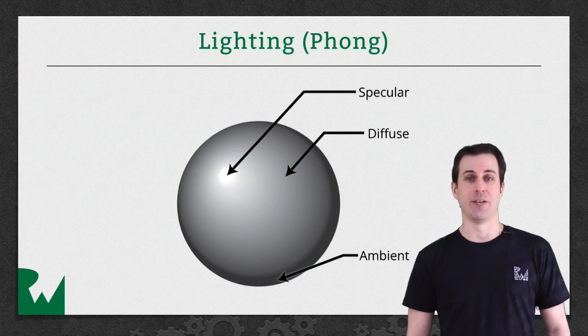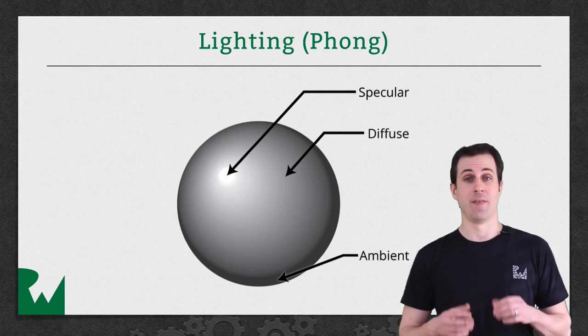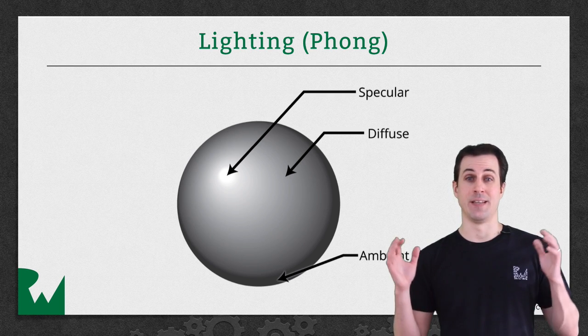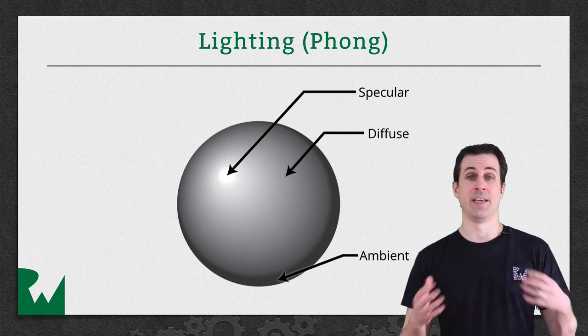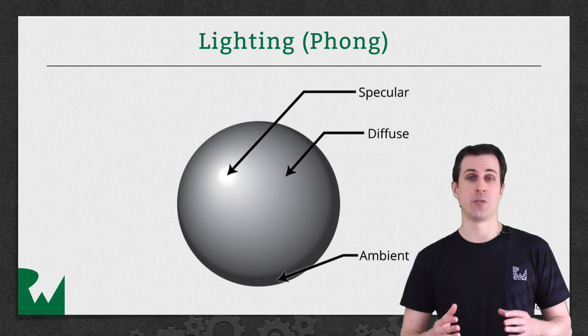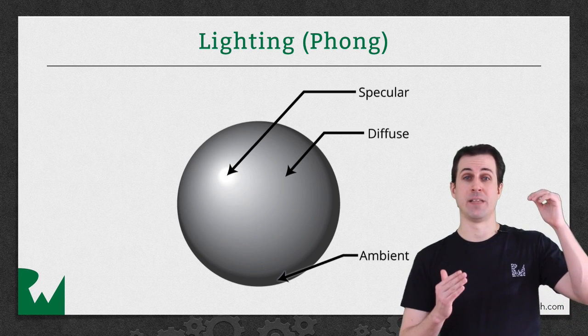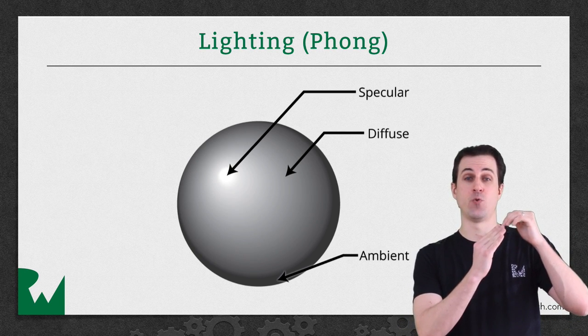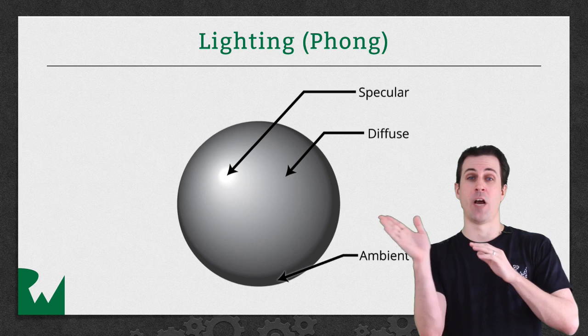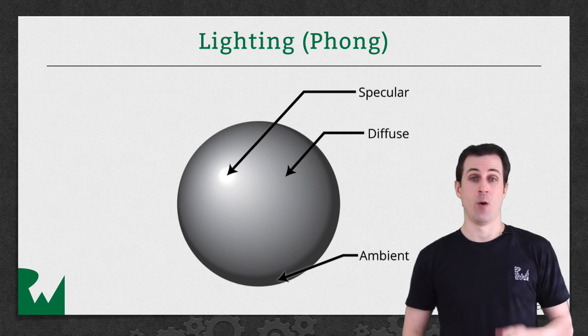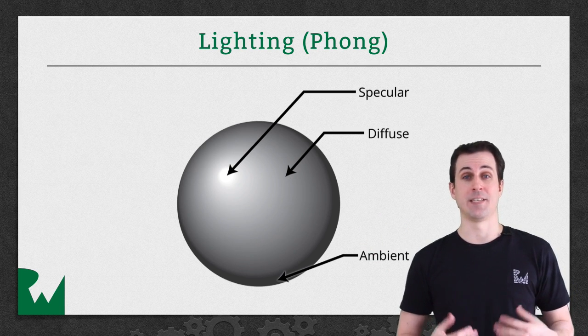We've been covering the Phong lighting model, and so far we've covered two parts of it. The ambient lighting, which represents the light that's bouncing around a room, hitting everything equally, and the diffuse lighting, which represents the part of the light that's brighter when it faces toward a fragment and darker when that fragment is facing away from the light. Well there's one more part of the lighting, and that's the specular lighting.